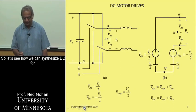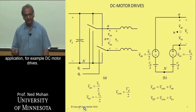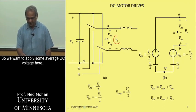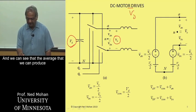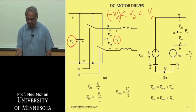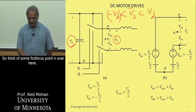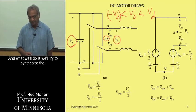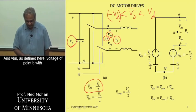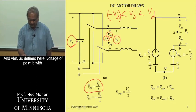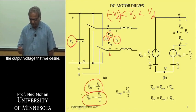Let's see how we can synthesize a DC for applications in, for example, DC motor drives. We want to apply some average DC voltage — that's what we would like to produce. The input is V_D, and the average output can be in the range minus V_D to plus V_D. So think of some fictitious point N over here — it doesn't exist, but let's just think of it. What we will do is synthesize the average V_AN from this fictitious point N to A to be half of the output voltage we desire, and V_BN — the voltage of point B with respect to point N — to be minus half of the output voltage we desire.